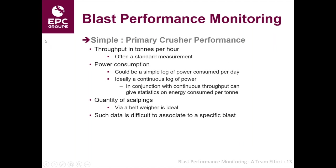Primary crusher performance — you will generally all measure throughput in tonnes per hour; it's generally a standard measurement. You could measure power consumption, either a simple daily log of the power consumed, or ideally a continuous log of power in conjunction with the amount of material being crushed. We can look at scalpings, generally best done via belt wear. It's worth saying that such data you can't really, at the moment, associate to a specific blast — so generally we could do it over a month and then look at another month and see if there's been a global change.